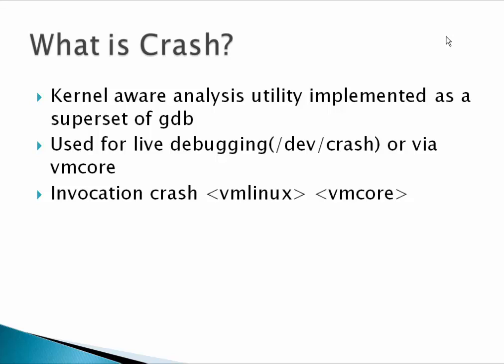The first thing is a utility called crash. What exactly is crash? If any of you have used GDB to analyze your application code, crash is similar to GDB — or we can say it's a kind of superset of GDB. It's basically a kernel-aware analysis utility implemented as a superset of GDB capability, used to investigate a variety of core dumps.